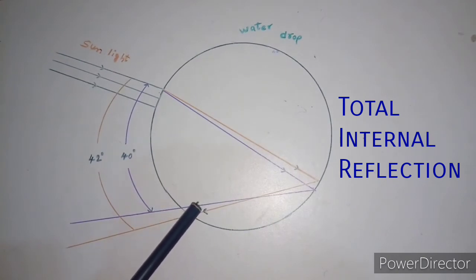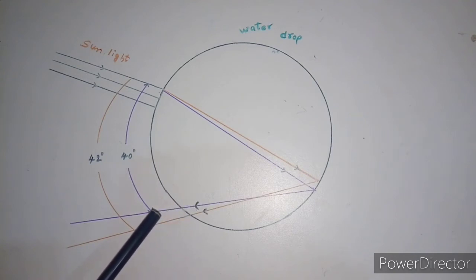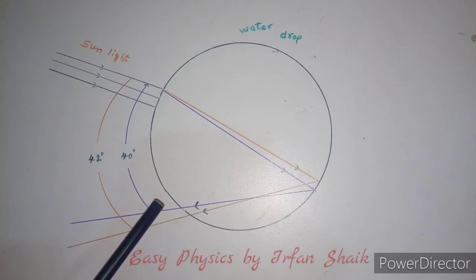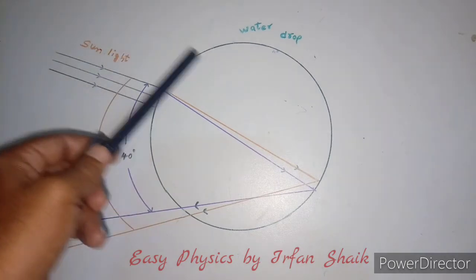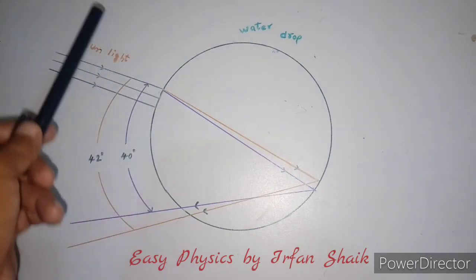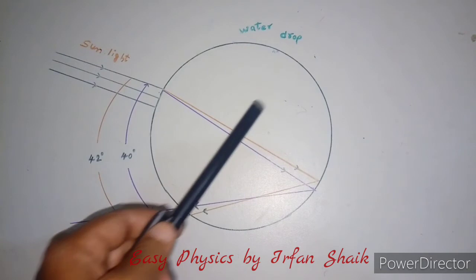Each color is again refracted into the air. At the second refraction, the angle between red and violet rays further increases when compared to the angle between those at first refraction. The angle between incoming and outgoing rays can be between zero degrees to 42 degrees.